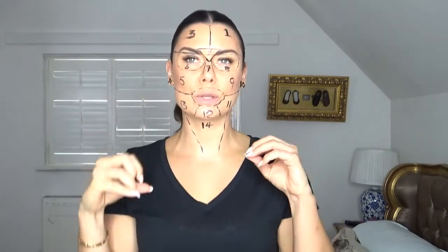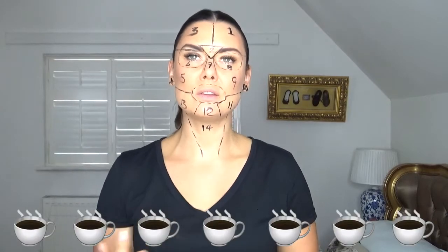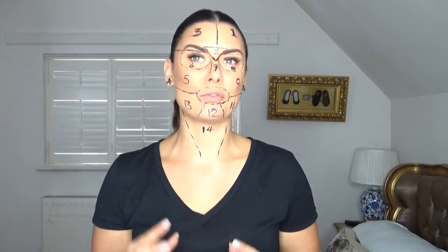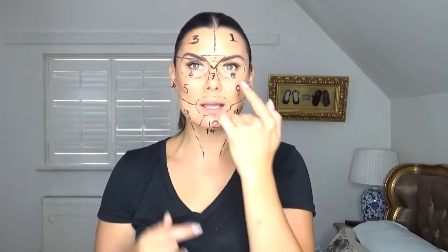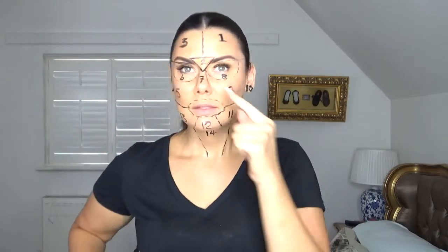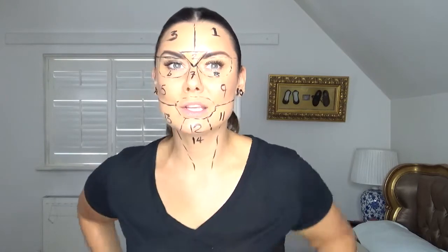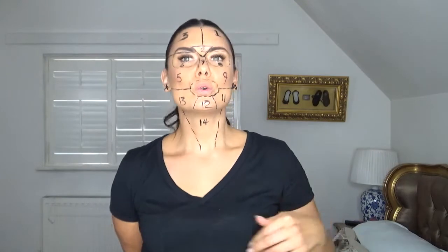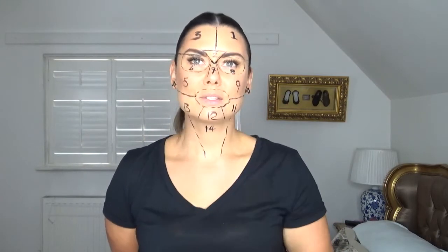Zones four and ten are your kidneys. If you're taking too much caffeine or not hydrating yourself enough, you could get hot ears or dark circles around zones six and eight — around your eyes. Too much coffee can cause bad circulation around the eyes, so you need to reduce that a little bit.